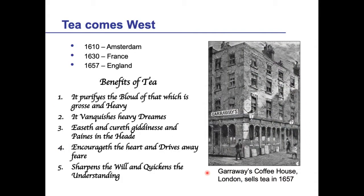There's a long history of tea developing from the eastern Himalayas. It came into China where it was used as a medicinal plant, grown generally in monastic gardens, and then became a more general drink across the population. With the growth of the ceramics industry, we still call cups and saucers 'China' for that reason. Eventually it came to the west — first to Amsterdam, then France, and then England in 1657. This is a picture of Garraway's coffee house in London, one of the first places known to sell tea. On the menu it didn't just say 'tea' — it gave a list of benefits, such as: 'it purifies the blood,' 'it vanquishes heavy dreams,' 'it encourages the heart and drives away fear.' So there were some high expectations for your cup of tea.